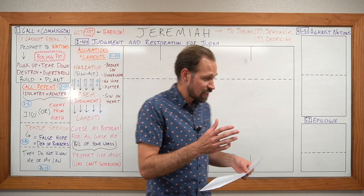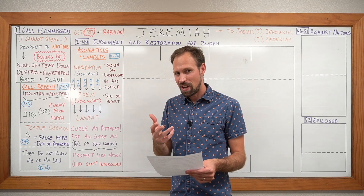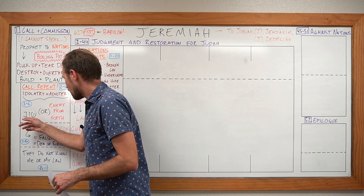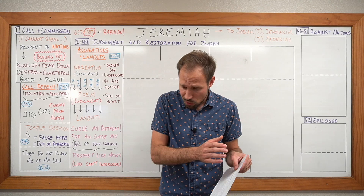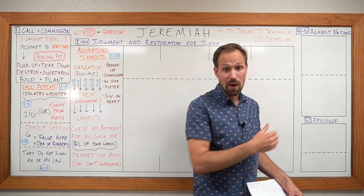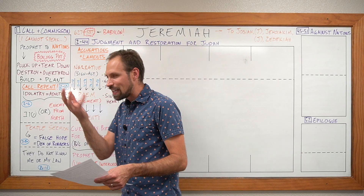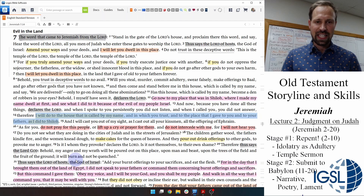He says you can avert this if you repent. Jeremiah's favorite word for repent is 'shuv' — shin, vav, bet — which means 'to turn.' It can have multiple senses: it could mean to turn back to Yahweh and repent, or it could mean to turn away from Yahweh and go toward other gods. Jeremiah plays with the multiple senses of this word.